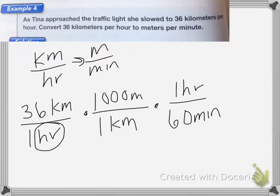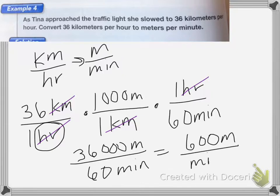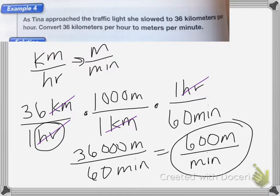Now I can start to cancel. Kilometers and kilometers cancel, hours and hours cancel. I'm left with 36,000 meters divided by 60 minutes. 36,000 divided by 60 is equal to 600 meters per minute as my final answer. Remember, you have to cancel everything — all of the labels you no longer need. In this case, we didn't need the kilometers and we didn't need the hours.